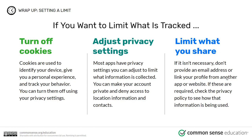If you want to limit what is tracked, turn off cookies — you can do that through your browser. Cookies are used to identify your device, give you a personalized experience, and track your behavior. You can turn them off using your privacy settings. Most apps also have privacy settings you can adjust to limit what information is collected — you can make your account private and deny access to location information and contacts. You can also limit what you share; if it isn't necessary, don't provide an email address or link your profile from another app or website. If these are required, check the privacy policy to see how that information is being used.